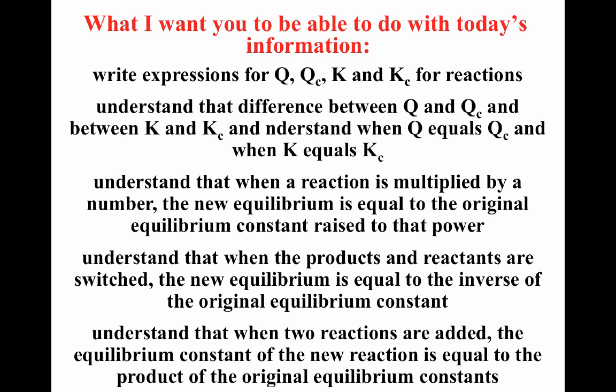You should be able to understand the differences between Q and Q sub C, and between K and K sub C, and understand when Q equals Q sub C and when K equals K sub C. You should understand that when a reaction is multiplied by a number, the new equilibrium constant equals the original raised to that power. When products and reactants are switched, the new equilibrium constant equals the inverse of the original. And when two reactions are added, the new equilibrium constant equals the product of the original equilibrium constants.